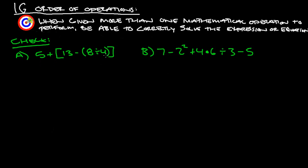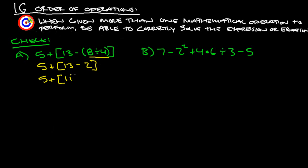For problem A, we have two sets of parentheses — big brackets and inner parentheses — so start with the innermost: 8 divided by 4 is 2. So we have 5 plus brackets, 13 minus 2. Next, handle the brackets: 13 minus 2 is 11. Then 5 plus 11 gives us 16.